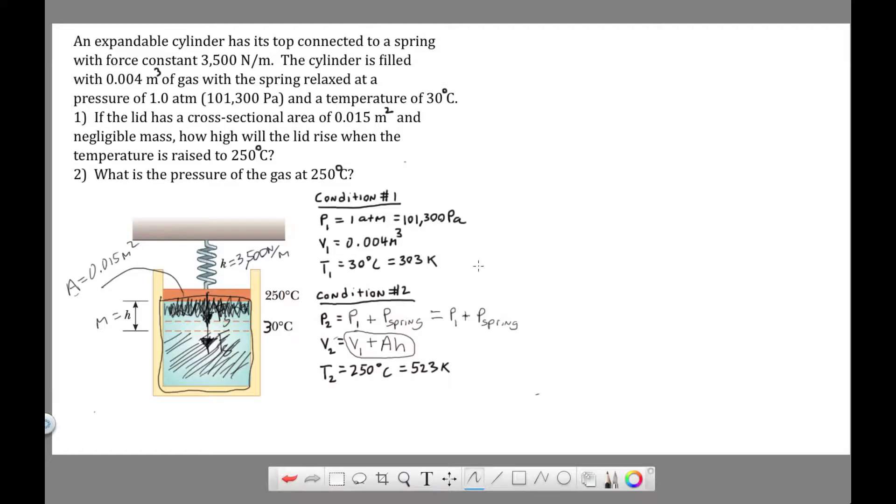Pressure two is equal to pressure one, which was the pressure of the gas before it started to heat up, plus the added pressure from the spring. We're going to substitute in the definition for pressure. Pressure is force over area. So this is P1 plus force of spring over area. And then the next thing we substitute in is force of spring is K times H, where H is the distance that the spring is compressed. So we have P1 plus KH over A.